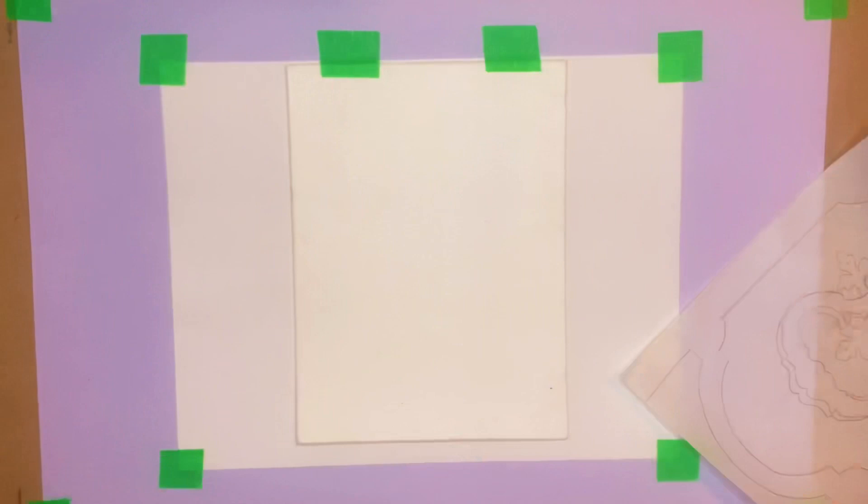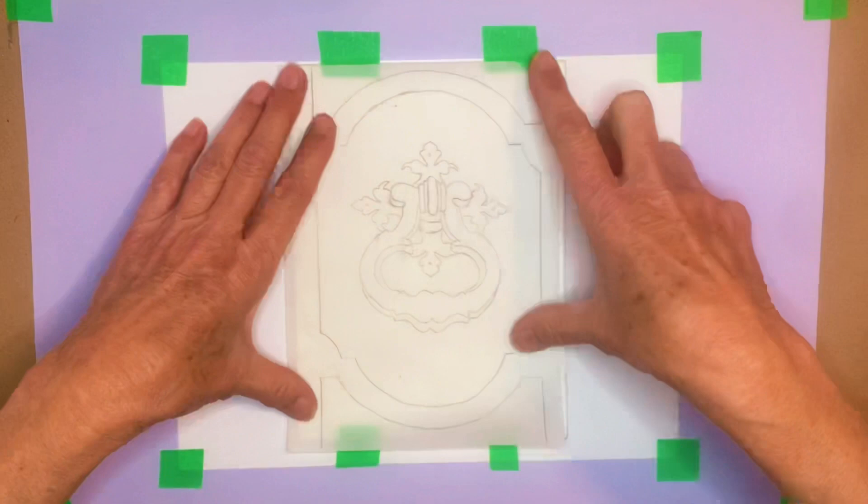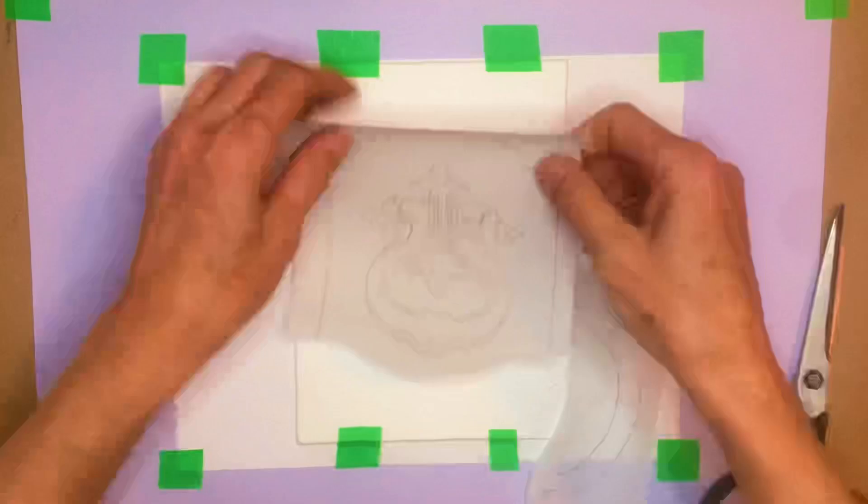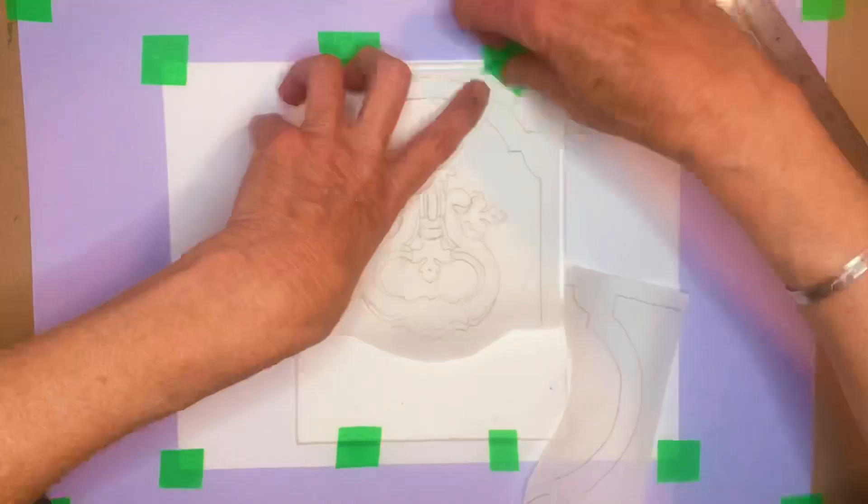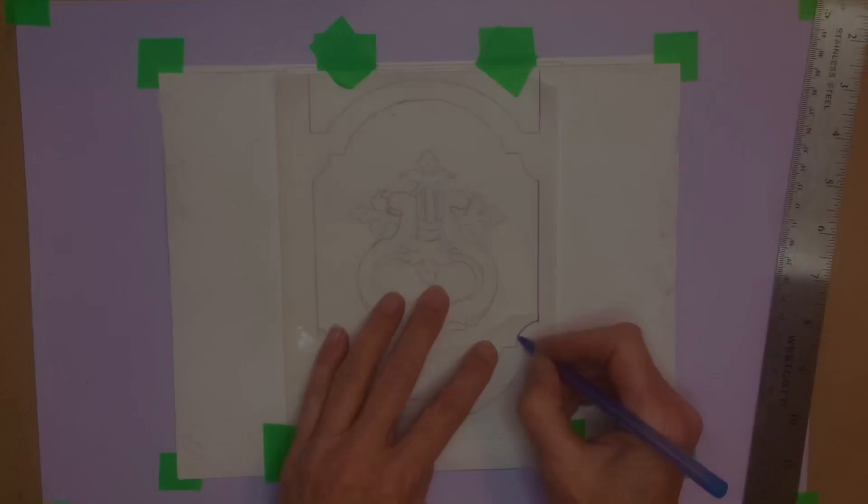The drawing is transferred to tracing paper and trimmed to fit the plate. The graphite paper is then used to transfer the image to the mat board plate.